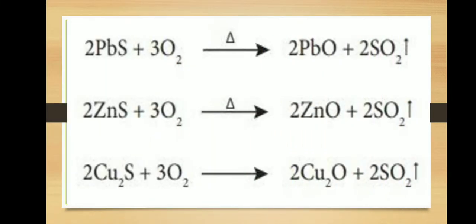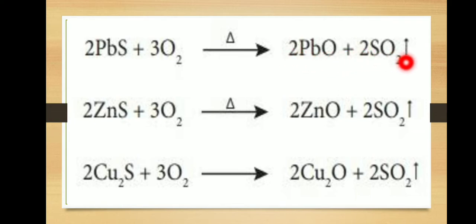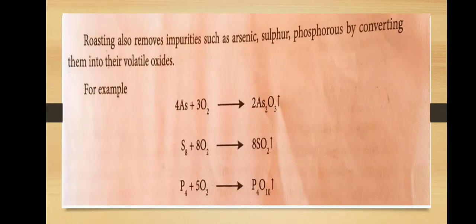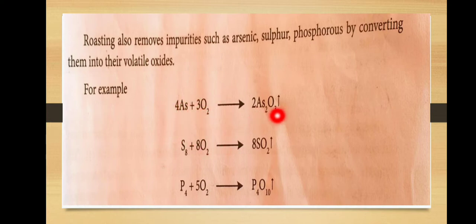For example, lead sulfide, zinc sulfide, and copper sulfide are strongly heated in the presence of air to form their respective metal oxides — lead oxide, zinc oxide, and cuprous oxide — while sulfur dioxide is removed. Roasting also removes impurities such as arsenic, sulfide, and phosphorus by converting them into volatile oxides.